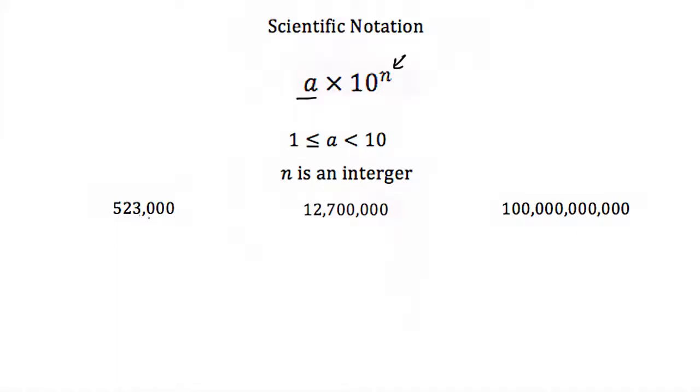So if we had 523,000, I could write that as 5.23, because remember our number has to be between 1 and 10, and then we put a times 10, and then this would be to the 1, 2, 3, 4, 5th power.